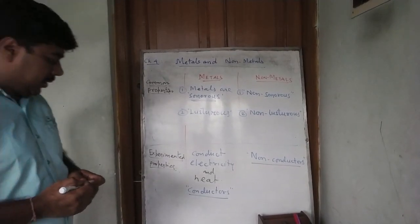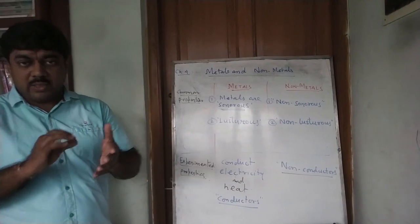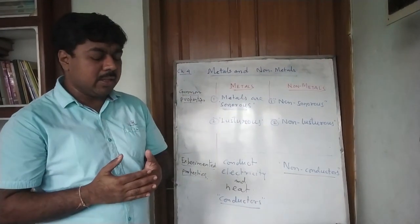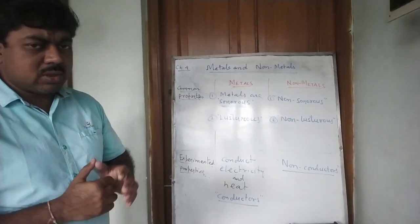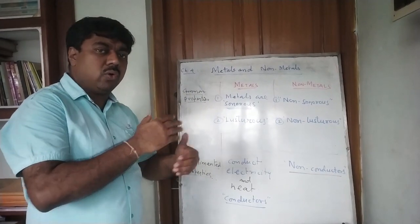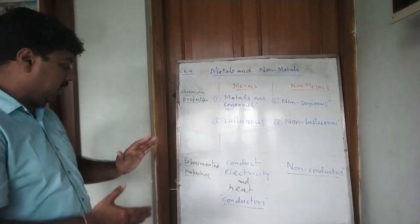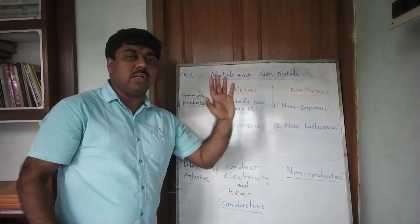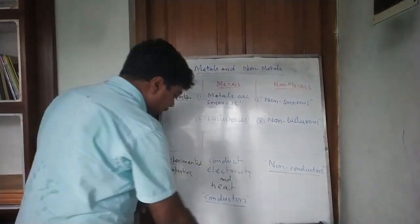But there are some exceptions. For example, the pencil lead — when you write with pencils, the pencil lead contains graphite, which can conduct electric current but not heat. So some examples are exceptional, which you will know afterwards. But the general property is that metals are conductors and non-metals are non-conductors.